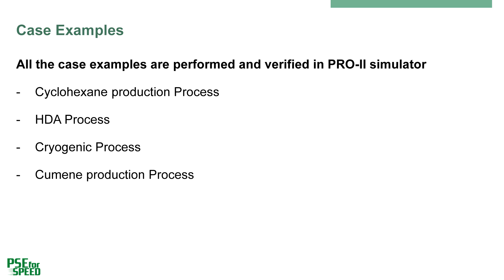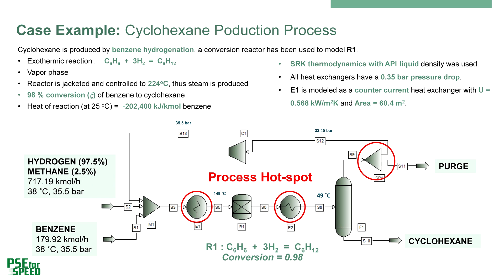We have tested the option for simultaneous process optimization and heat integration through four case studies: a cyclohexane production process, a well-known HDA process, a cryogenic process, and a cumene production process. In this presentation, we will use the cyclohexane production process to highlight the step-by-step workflow for simultaneous process optimization and heat integration, reporting results obtained through the Aspen Plus v2 process simulator. In principle, any other process simulator could be used by adding the heat integration module as an external module embedded in the process optimizer.